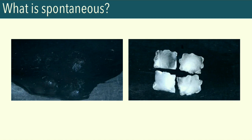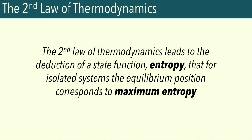Luckily, we do have another law that could lead us to that criteria. The directional nature of permissible processes is addressed by the second law of thermodynamics. The second law leads to the deduction of a state function — entropy — such that for isolated systems, the equilibrium position corresponds to maximum entropy. So overall, for spontaneous processes, the entropy tends to increase until it reaches the equilibrium state, which corresponds to maximum entropy. We'll explain what all this means a little later. But I just wanted to get this out here because it's kind of a long story on how entropy was introduced as a thermodynamic parameter. The deduction of the state function actually came from a very practical question, namely the development of the cyclic heat engine.